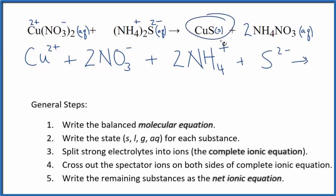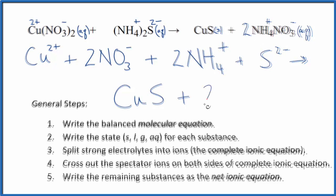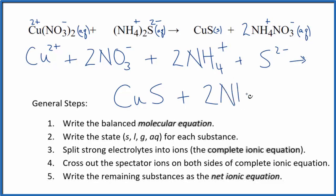For the products, we don't split solids apart in net ionic equations. So we're just going to leave this as CuS. And then we have two ammonium ions. That's the positive. The nitrate is the negative. Just like the reactants here. And we have two nitrate ions. Also just like the reactants. So this is the complete ionic equation.